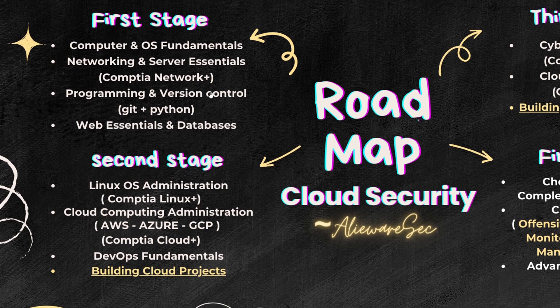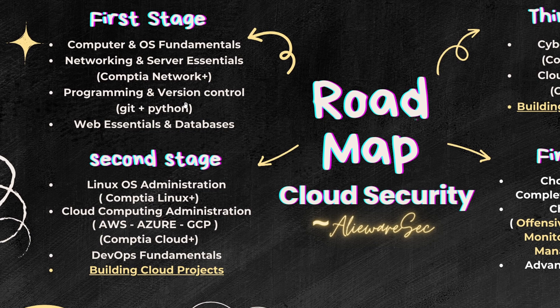You must know what is programming and what is version control. Version control is basically GitHub and similar things. Please do learn at least a single programming language and know how to code a little bit — that will help you as you move forward in the journey. Web essentials and databases: you should know how the web works, what databases are, how queries work, and what SQL and NoSQL databases are. Cover all these things to complete the first stage. This stage is not about security or cloud at all — it's just to build up your fundamentals and a proper base.